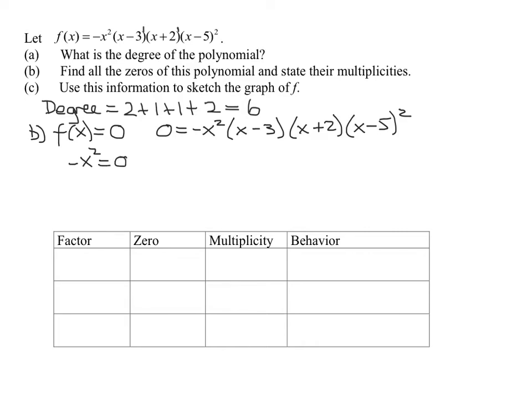So I get negative x squared equals 0, which gives me x equals 0. So I want to start filling out this table here. So I have a factor of x squared. The zero that goes with it is x equals 0, and the multiplicity is the exponent on the factor, so my multiplicity is 2.